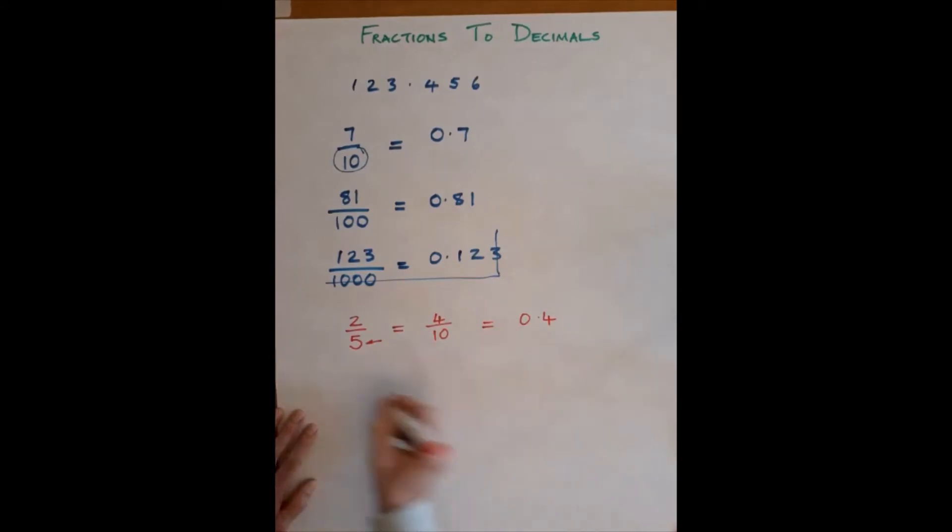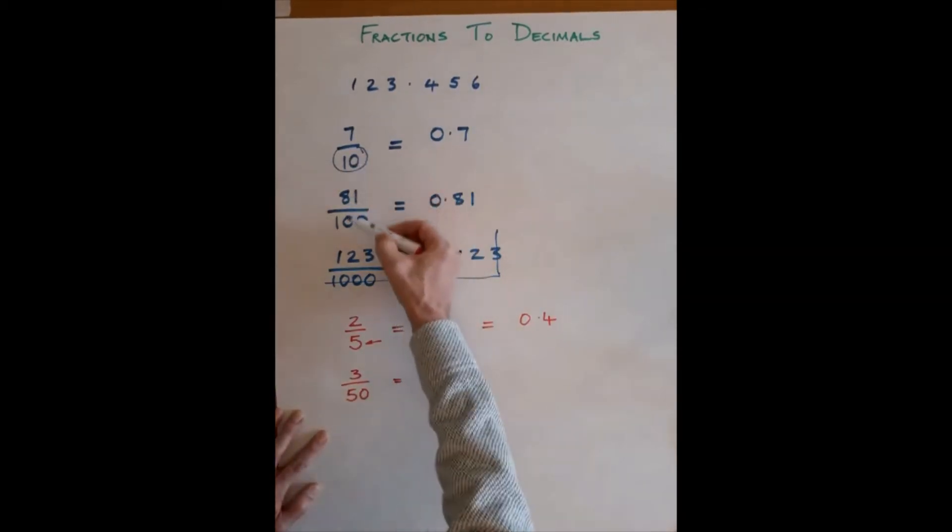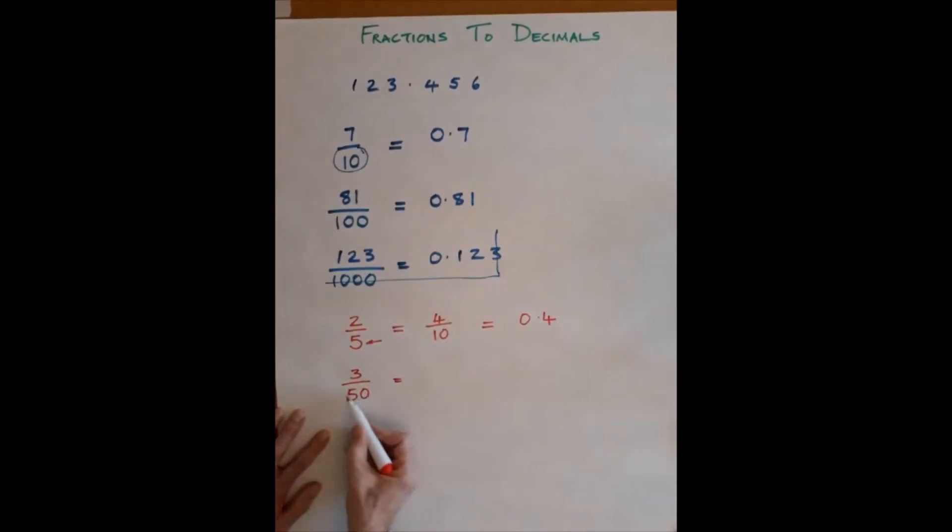Let's pick off a different one. It could be 3 over 50. So once again, this doesn't work with 10, 100, 1000, but 2 times 50 is 100. So multiply this by 2 will give us 100, multiply this by 2 will get 6. So if we rewrite this one, this is going to appear in the hundredths column.